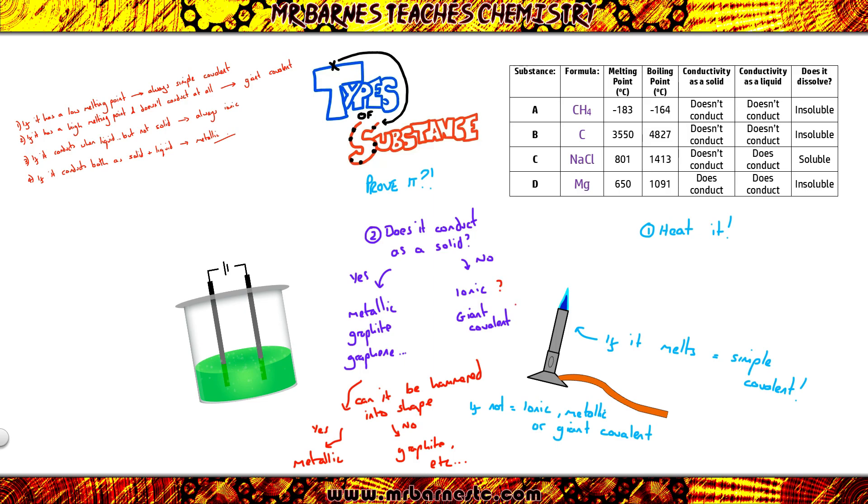And then all we're left with is ionic and giant covalent. So does it conduct electricity as a liquid but not as a solid? So we've already said it doesn't conduct as a solid. All we need to do now is either melt it or dissolve it. Put it into a circuit with electrodes like your electrolysis, and if it does conduct, it's going to be ionic. If it doesn't, you're left with your giant covalent. That's all it can be.